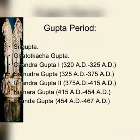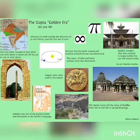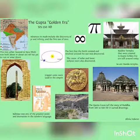Next is Kumaragupta I. He adopted the title of Mahendraditya. He introduced the worship of god Kartikeya and founded the monastery of Nalanda, which developed into a great center of learning. Kalidasa flourished in the reign of both Kumaragupta I and Chandra Gupta II. These are the important Gupta rulers.